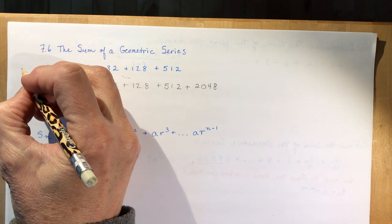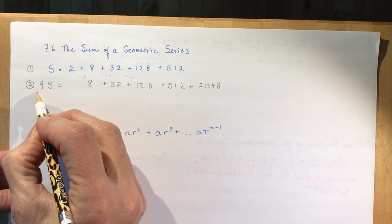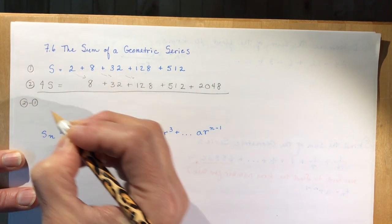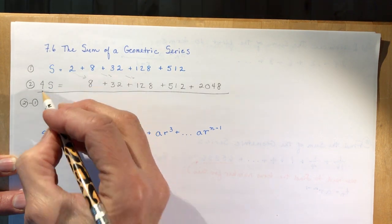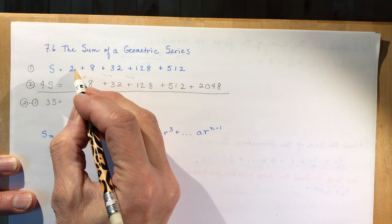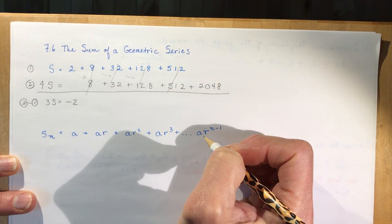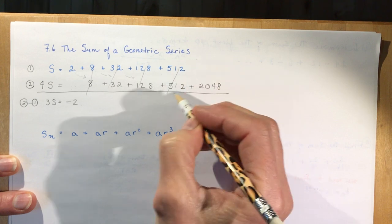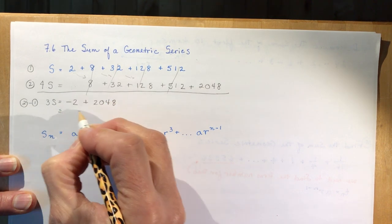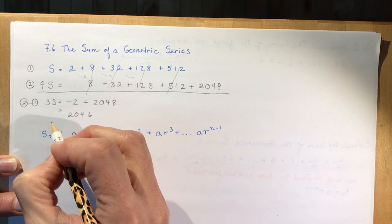This is how we're going to derive the formula. I'm going to call this equation 1 and equation 2, draw a nice big line across, and do equation 2 minus equation 1. So 4 minus 1 is going to be 3S, then 0 minus 2 is minus 2, and all of these other numbers are going to disappear except for this one: 2048 minus 0, which gives me plus 2048.